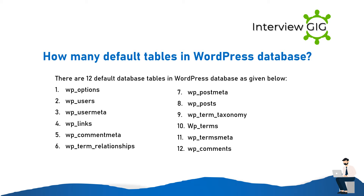How many default tables are in the WordPress database? There are 12 default database tables: wp_options, wp_users, wp_usermeta, wp_links, wp_commentmeta, wp_term_relationships, wp_postmeta, wp_posts, wp_term_taxonomy, wp_terms, wp_termmeta, and wp_comments.